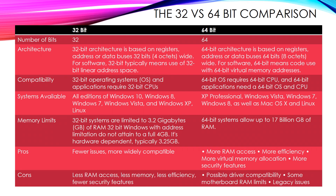For compatibility, 32-bit operating systems and applications require 32-bit CPUs, whereas 64-bit ones require 64-bit CPUs. Regarding systems available, almost all operating systems are available in 32-bit versions, whereas 64-bit versions are also supported.